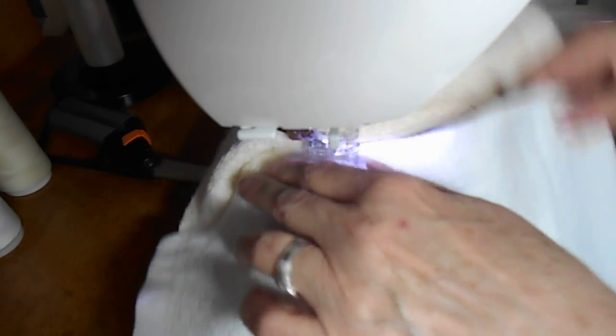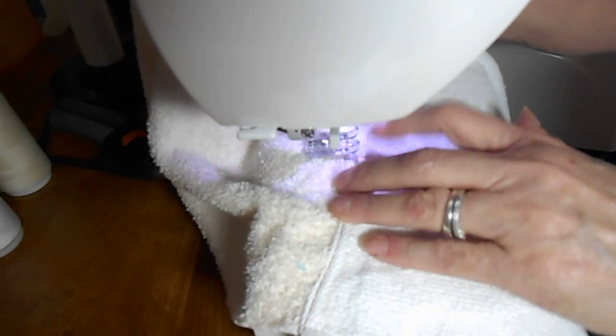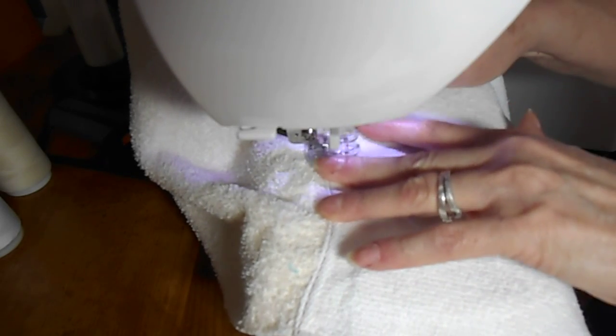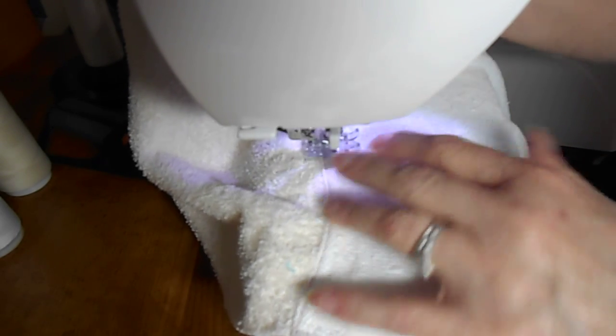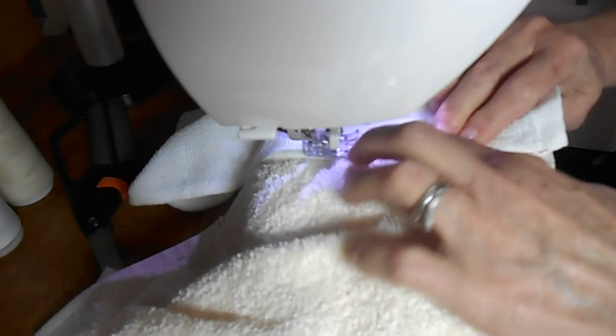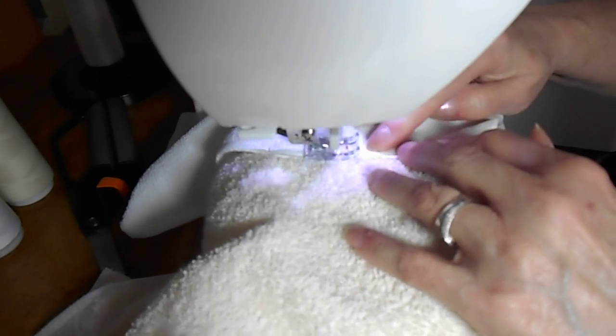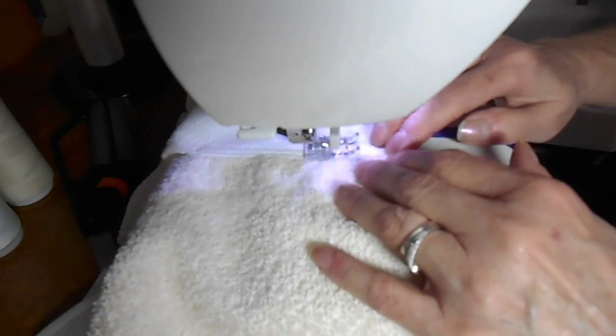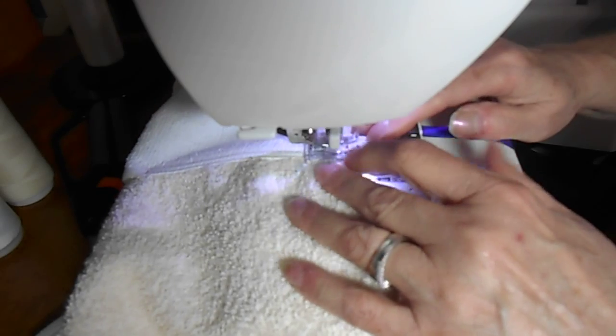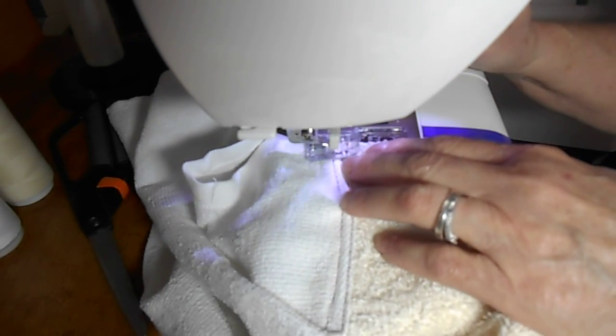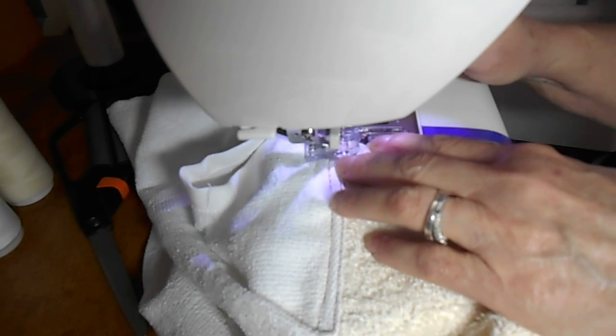then I turn at the end and go back this direction or back tack it here, and then turn around and you can feel underneath there, your seam, the other part of the towel, and then just sew right back down. Turn it, do your back tacking to secure it to the towel.